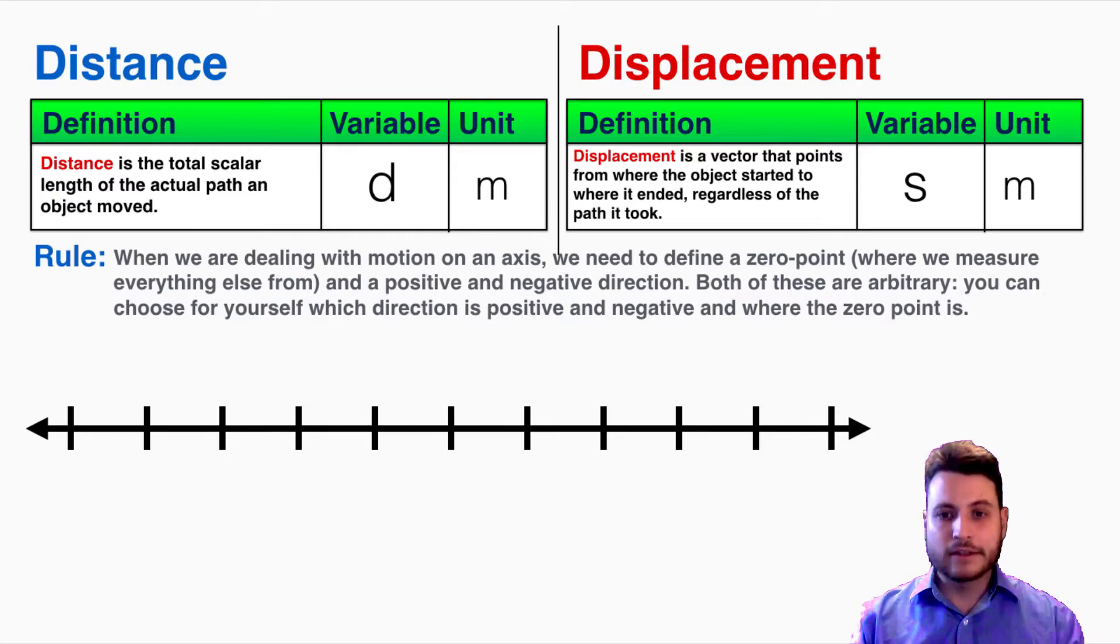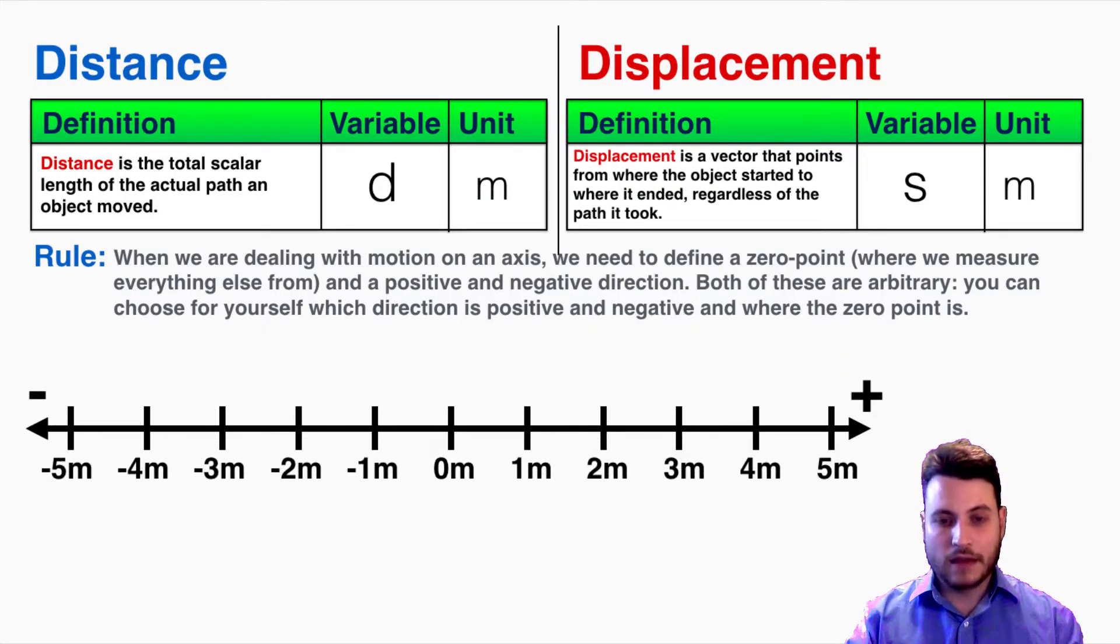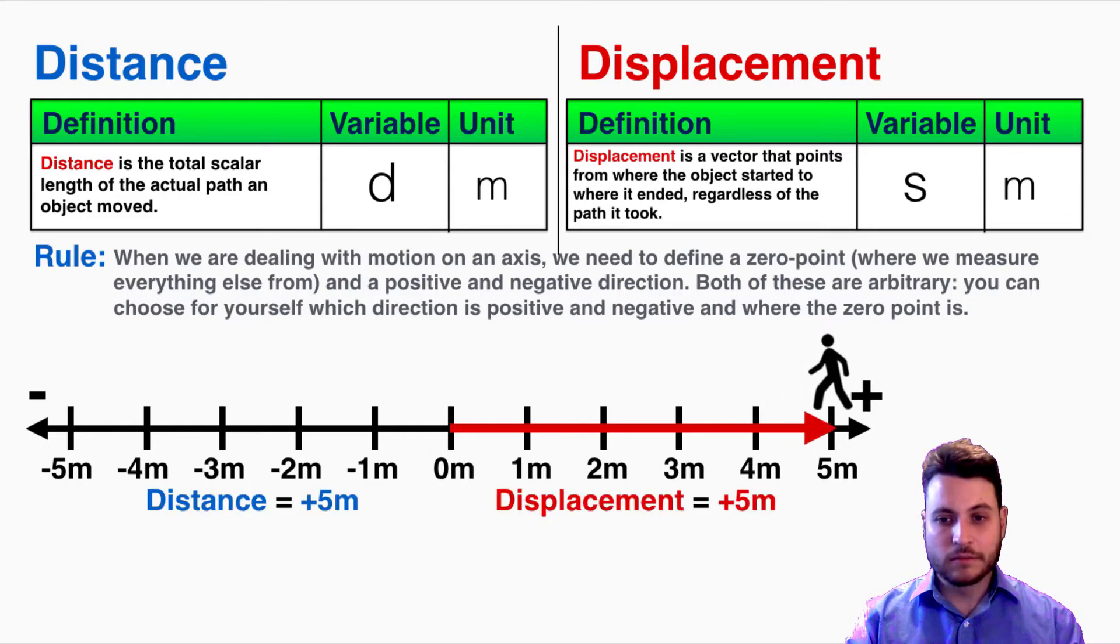When we're dealing with motion on an axis we need to define a zero point where we measure everything else from and a positive and negative direction. Both of these are arbitrary. You can choose for yourself which direction is positive and negative and where the zero point is. I'm going to choose zero to be right here and these will be my positive and negative directions. I'm going to have this person move along the number line and observe the differences in their distance and displacement. They move to positive 5 meters and I can see that their displacement was positive 5 and their distance was also positive 5.